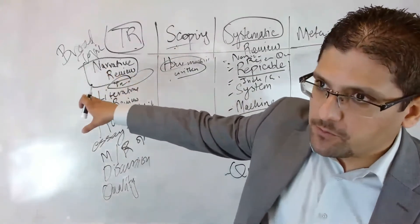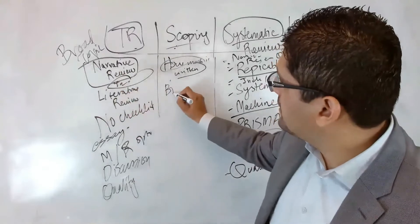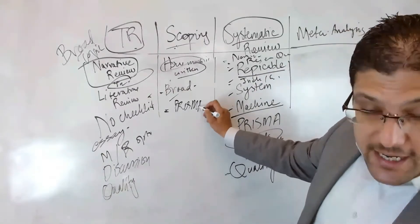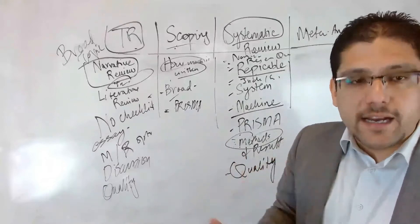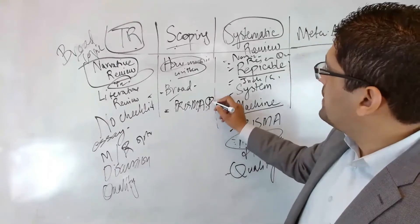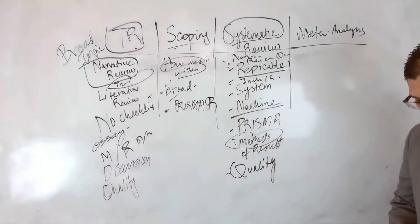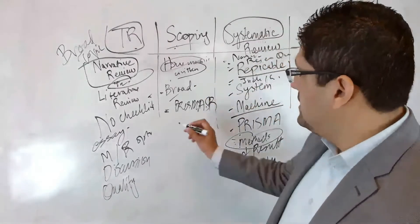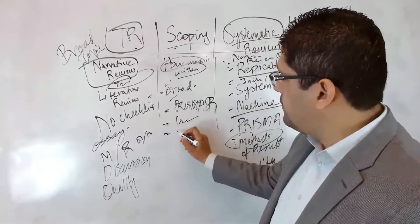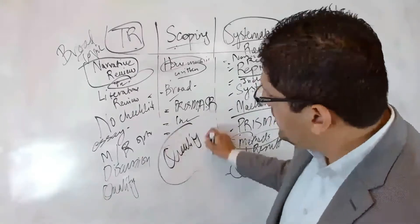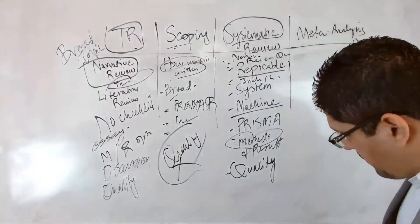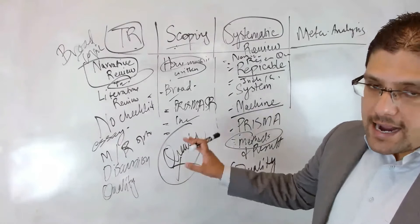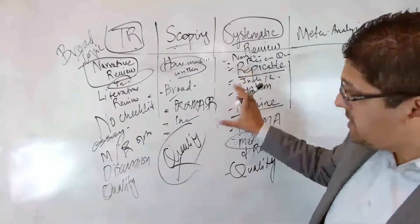In a scoping review you have a broad topic — like a traditional review — not a narrow research question like a systematic review. However, you still work it like a system and follow the PRISMA checklist for scoping reviews, known as PRISMA-ScR. Inclusion and exclusion criteria are present, but the key difference is that you deliberately do not check the quality of the included papers.